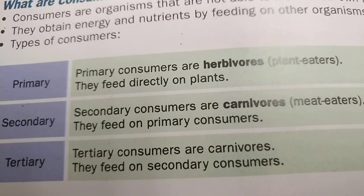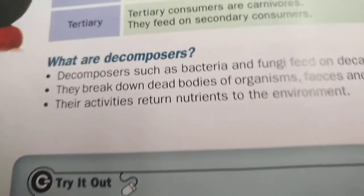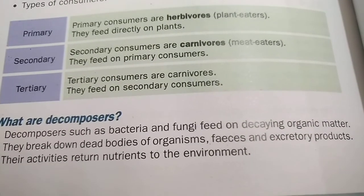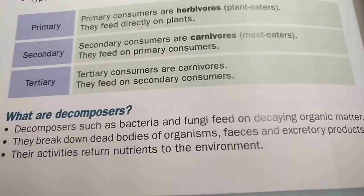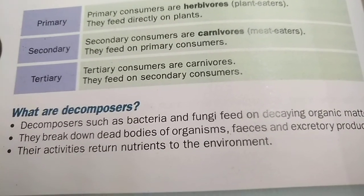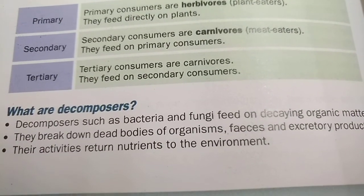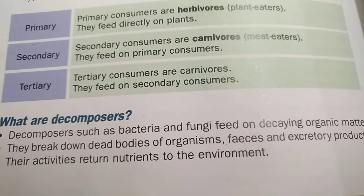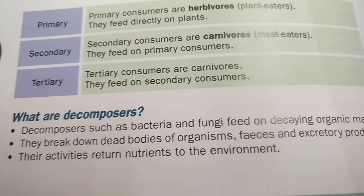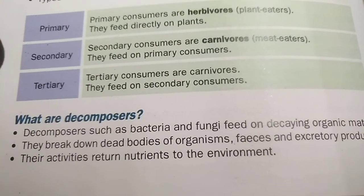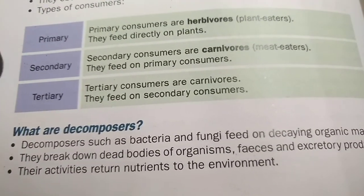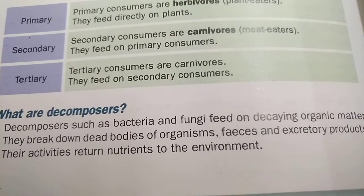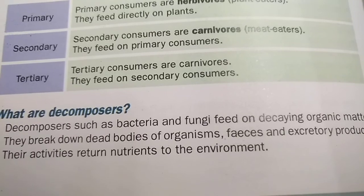Decomposers such as bacteria and fungi feed on decaying organic matter. They break down dead bodies of organisms such as plants and animals, as well as feces and excretory products. Even the urine and dung of animals are rich in nutrients — that's why we can use cow dung to fertilize our gardens.